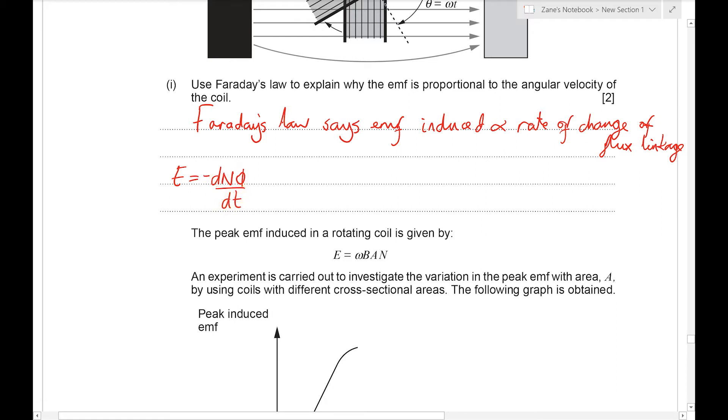Technically there's a minus in there because of Lenz's law, but we're not too worried about that. φ is AB cos θ, but θ is ωt as it shows on the diagram. And if you know your differentiation, if you're doing A level maths, you know that if we differentiate a cosine function, we get a sine function but also an extra ω will appear at the front due to the chain rule.